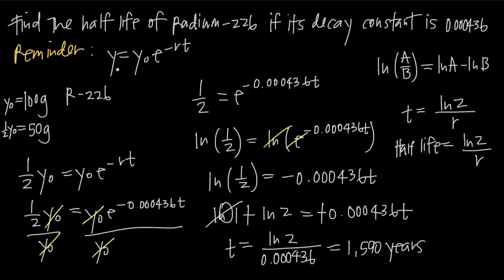So the formula we started with is a standard formula for exponential growth or decay. If you want to memorize it and apply it in many situations, you can go through this half-life process every time. Or if you memorize the shortcut formula — half-life equals natural log of 2 divided by the decay constant — you can save time: just take natural log of 2 divided by 0.000436 to get the half-life of radium-226 and skip the full process. Either approach works.